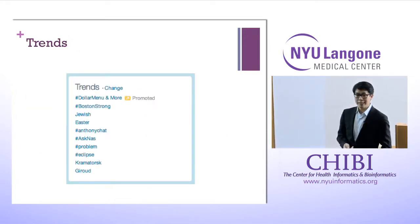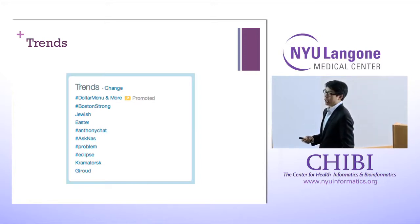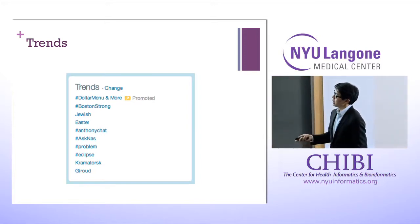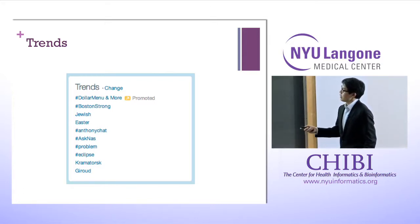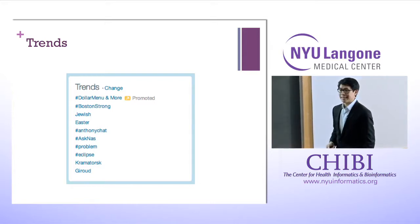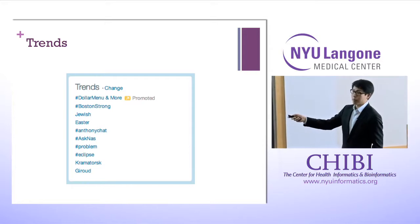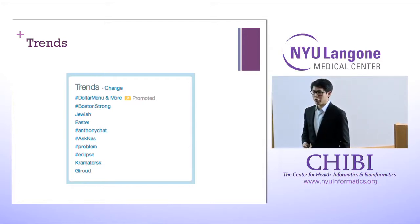Trends show the top ten things being tweeted at a given moment. You'll notice there's something called 'promoted,' meaning someone paid to put it at the top of the list. In this case, it was paid by McDonald's since it was the dollar menu.